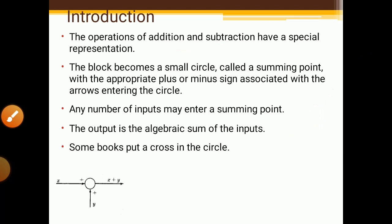Any number of inputs may enter a summing point, and the output is the algebraic sum of these inputs. In the first diagram, two inputs X and Y both have positive signs, so the output is X plus Y. In the second diagram, X has a positive sign and Y has a negative sign, so the output is X minus Y.